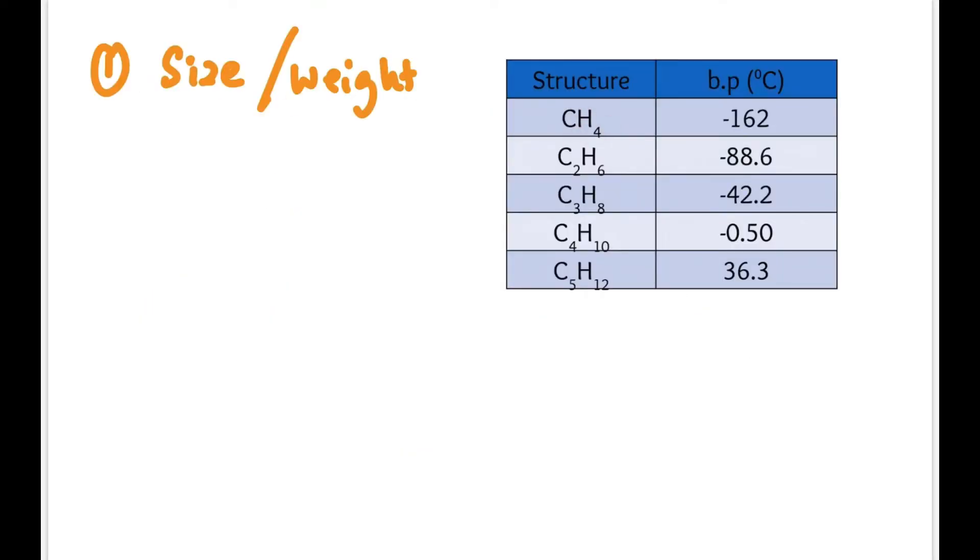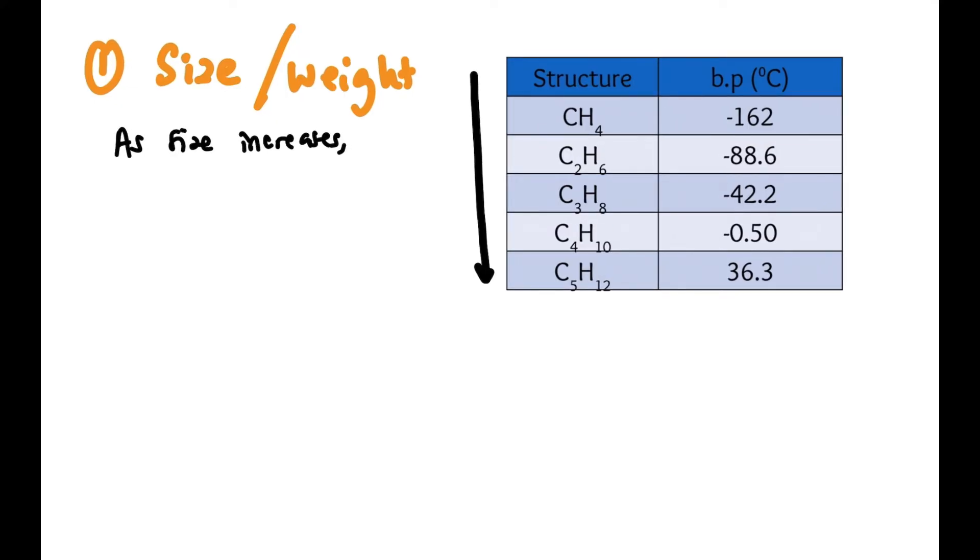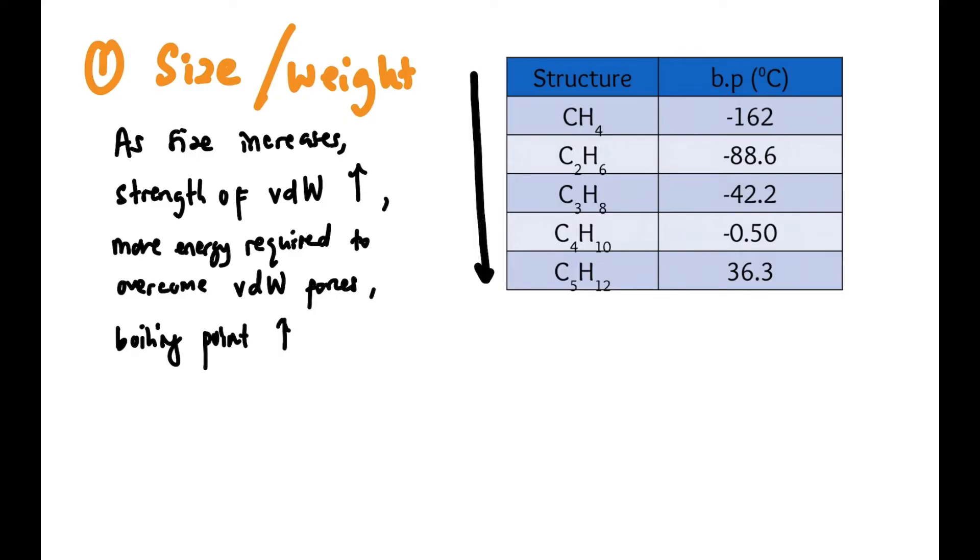The first factor is size or weight. If we look here, we have five compounds: CH4, C2H6, C3H8, C4H10, and C5H12. From top to bottom, the number of carbons or the size of the compound is increasing. As the size increases, the strength of intermolecular forces (van der Waals) also becomes stronger. When the strength of van der Waals is stronger, more energy is required to overcome the van der Waals forces in the molecule, so the boiling point also increases. If we notice, it goes from negative values to positive. Bigger size, higher boiling point.